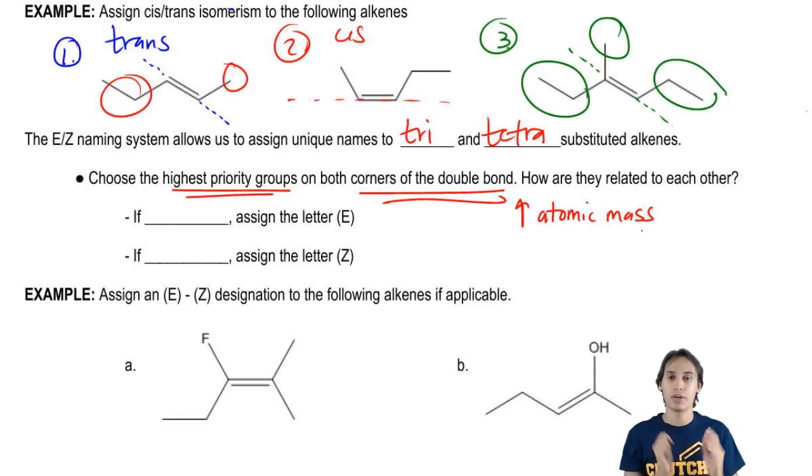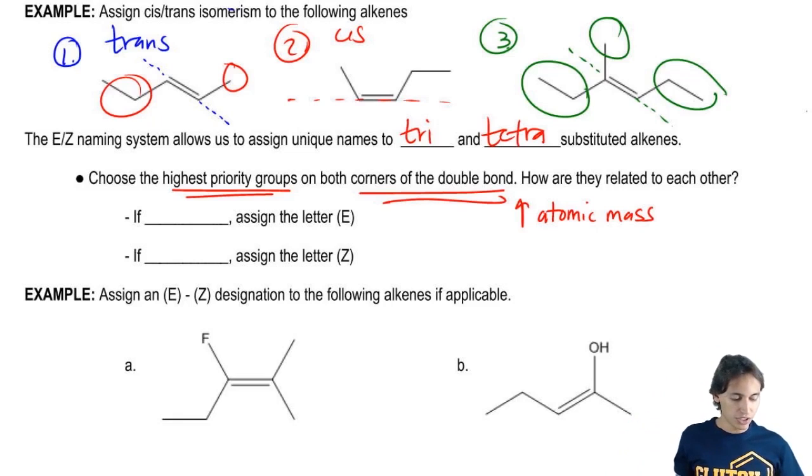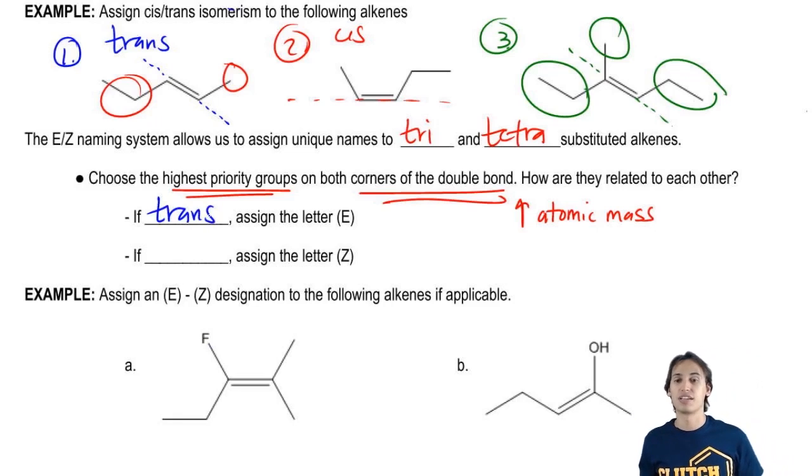That one's going to get my priority. And then I'm going to figure out how those two high priority groups are related to each other. If they're related to each other trans, then we're going to assign the letter E. If they're related to each other as cis, then we're going to assign the letter Z.